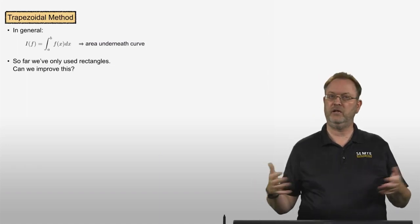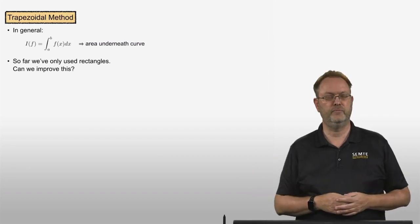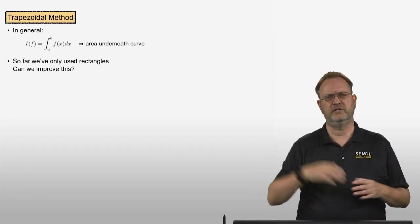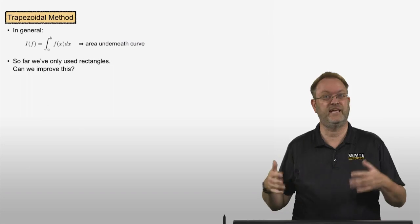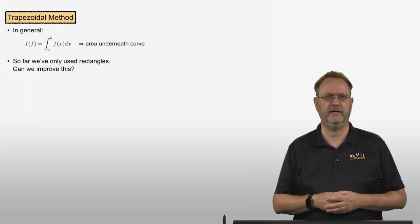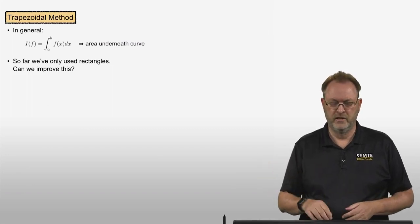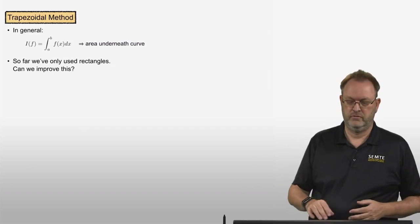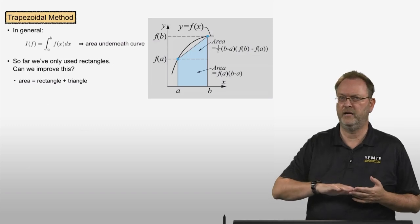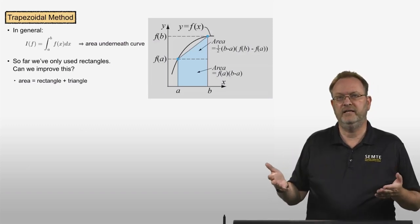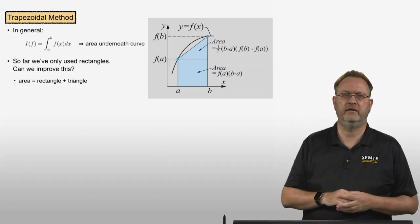All the methods up until now have been using a zeroth-order polynomial — just a constant — meaning the area approximation was always the area of a rectangle. Let's go further and use a first-order polynomial instead. If we approximate the function by a line, the area underneath it is made up of a rectangle area plus a triangular area. The rectangle area is f(a) times (b-a), and the triangle area is one-half times (b-a) times (f(b) - f(a)).